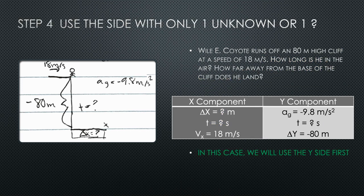Now that you have labeled everything, you can begin to solve the problem. Remember that you must solve the side that has one unknown variable, which is the Y component side in this problem.